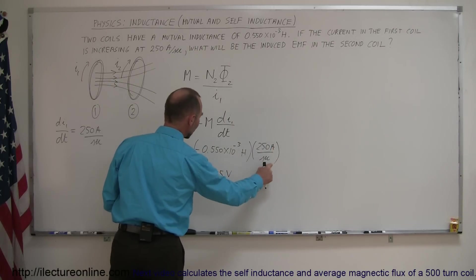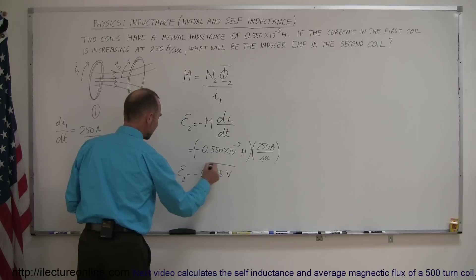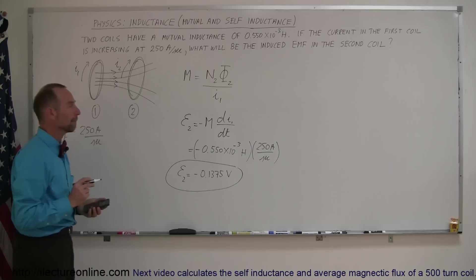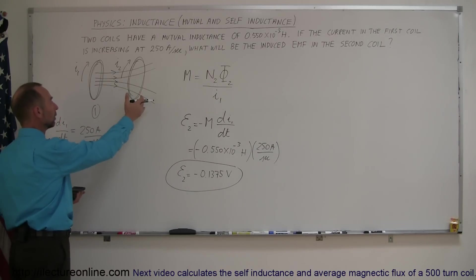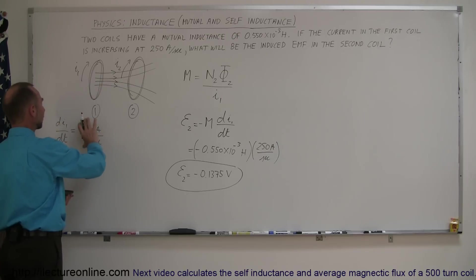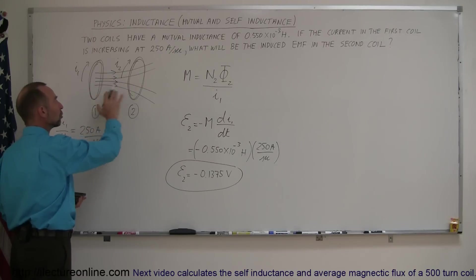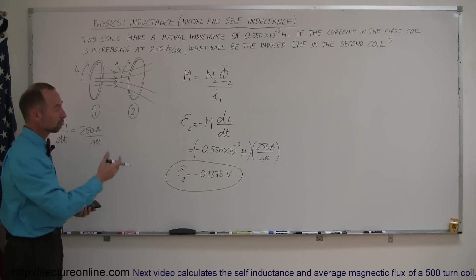So, Henry's times amps per second is the same as volts. And, there you go. So, that's how we calculate the EMF induced in a second coil, when there's a mutual inductance between the coils, and we know how fast the current is changing the first coil, and we know the extent of the mutual inductance between the two coils. And, that's fairly straightforward at that point.